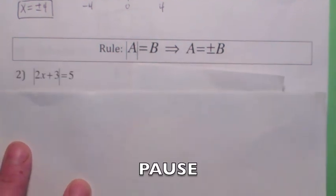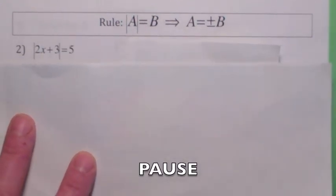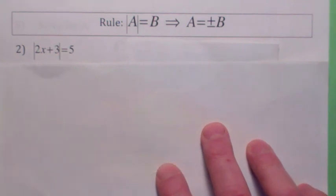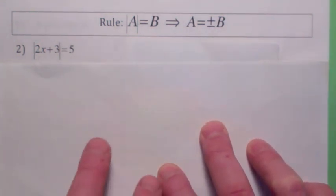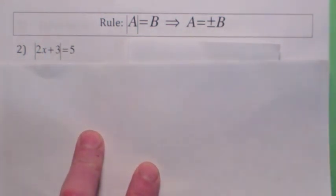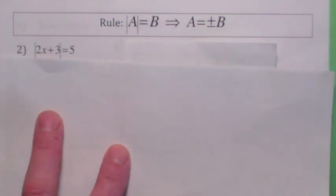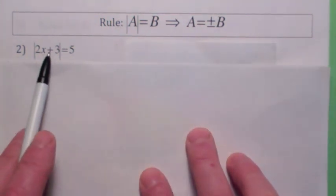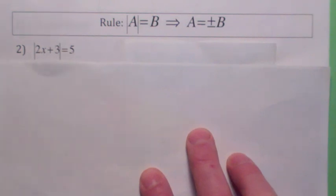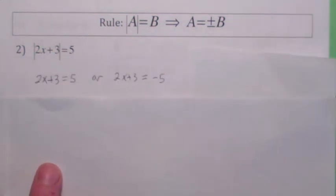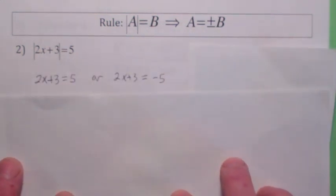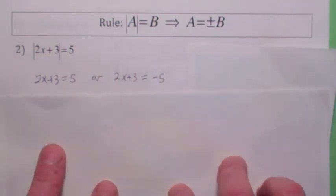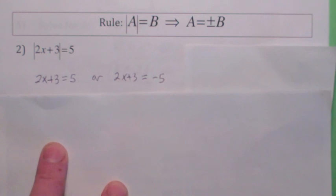So if you have an equation like this, absolute value of 2x plus 3 equals 5, hit the pause button, see if you can solve this one. You end up with what's inside the absolute value bars equals 5 or what's inside the absolute value bars is negative 5. So you should have had this as a next step. You always break it up. You're going to get two separate equations here.